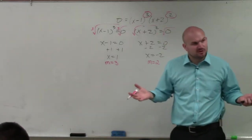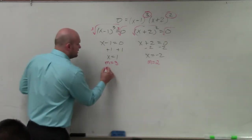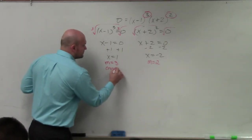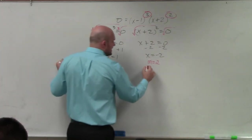Now why is multiplicity important? Because if the multiplicity of a zero is odd, it crosses. If the multiplicity of a zero is even, it bounces.